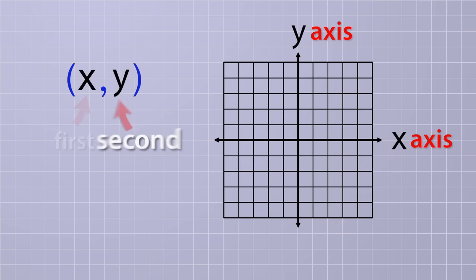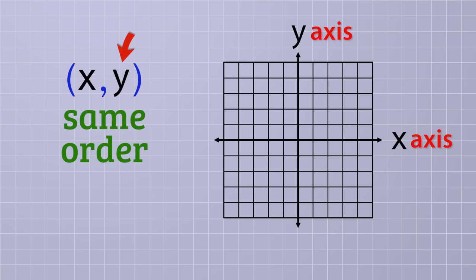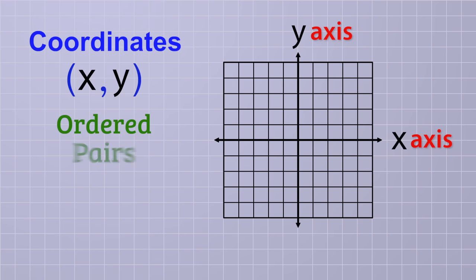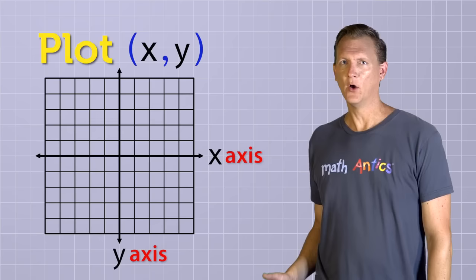The first coordinate number listed will be called x and the second coordinate number listed will be called y. And we're always going to list the numbers in that same order, x first and then y, so that we never get confused about which is which. In fact, coordinates are often called ordered pairs, because they're a pair of numbers that are always listed in the same order, x value first, y value second. So if you have the coordinates (3, 5), that means x equals 3 and y equals 5. Pretty easy, right?